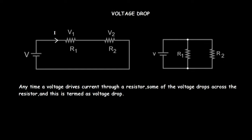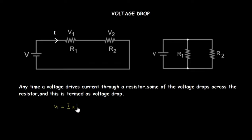Let's look at how to calculate the value of the voltage drop across a resistor. To calculate the voltage drop across a resistor, you just have to find the product of the current and the resistance of the resistor. So for R1, the voltage drop V1 will be equal to the current I multiplied by the resistance R1.